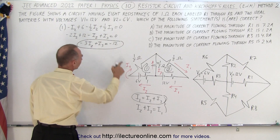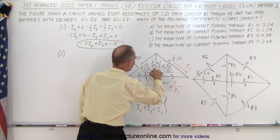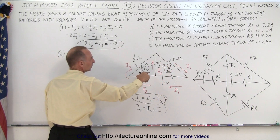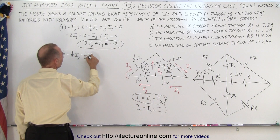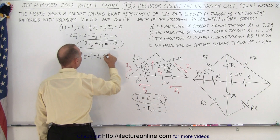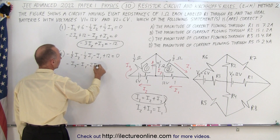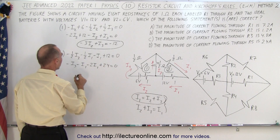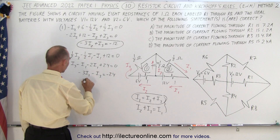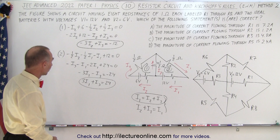For loop two, going around from the branch point gives minus one-half I3, minus one-half I1, minus I1, plus 12 volts equals zero. Multiplying through by two: minus I3 minus I1 minus 2I1 + 24 = 0, which gives minus 3I1 minus I3 = minus 24, or equivalently 3I1 + I3 = 24.